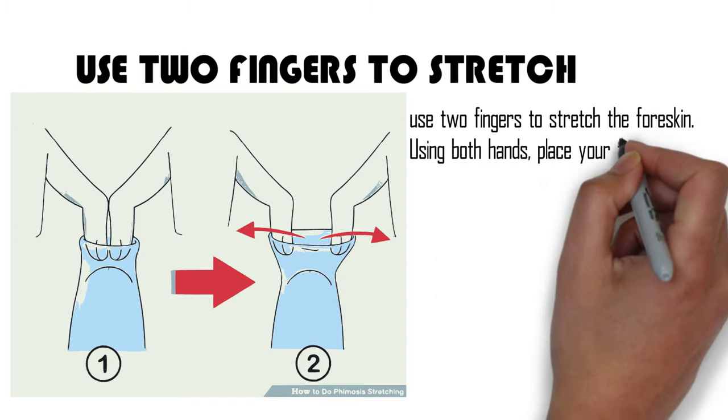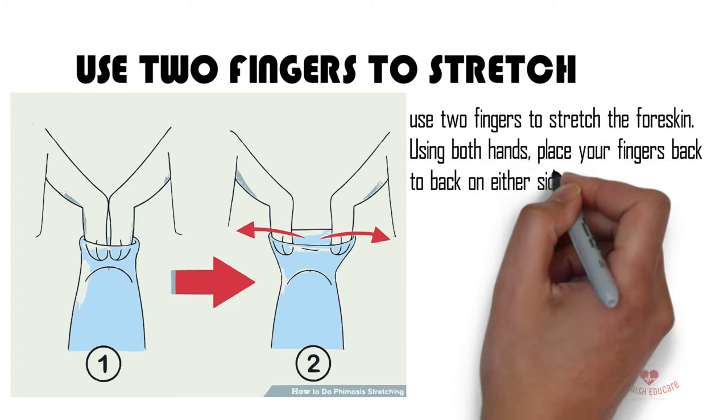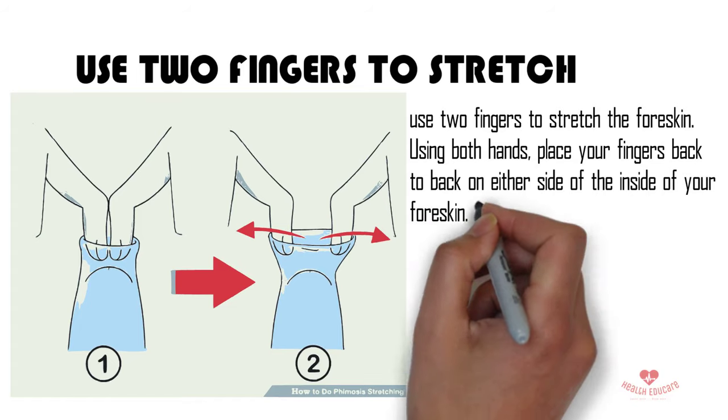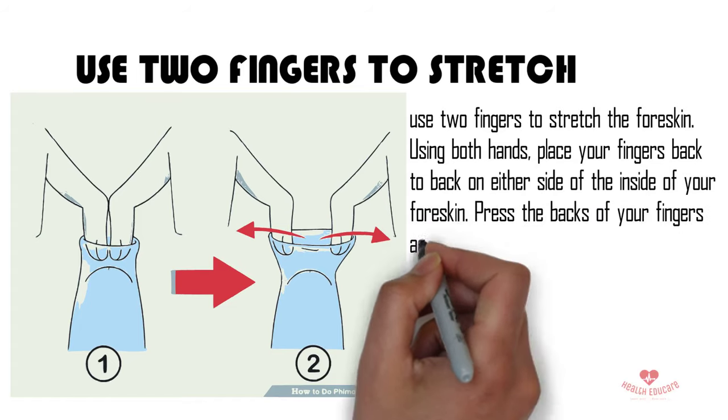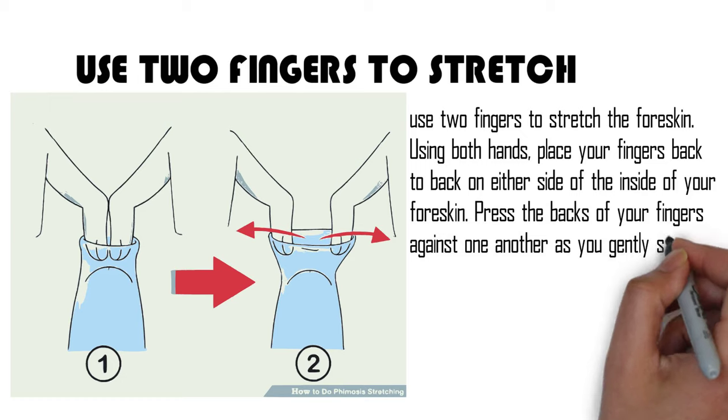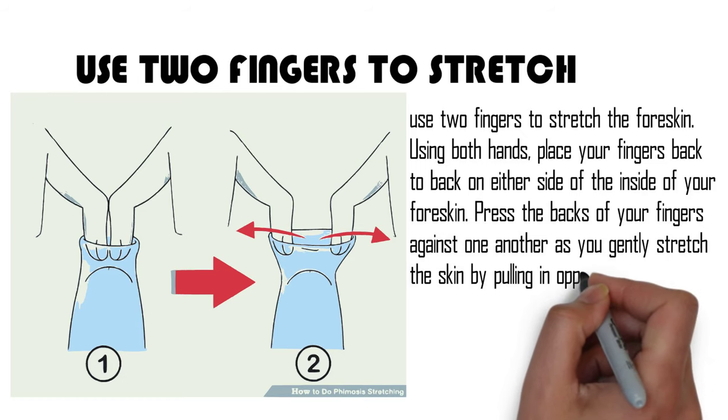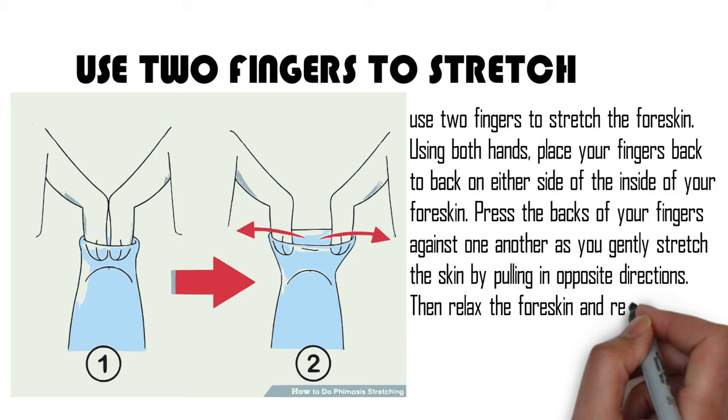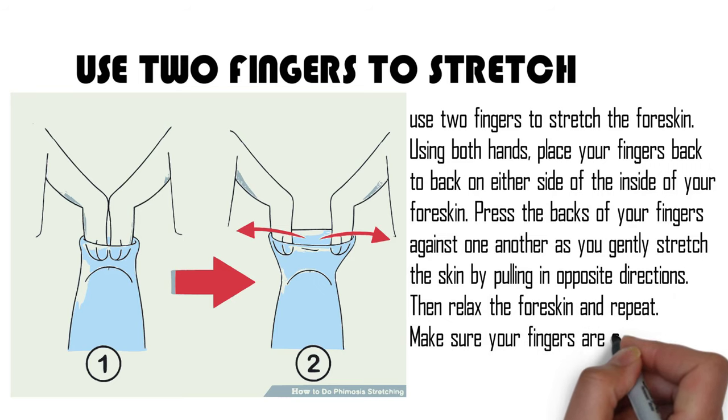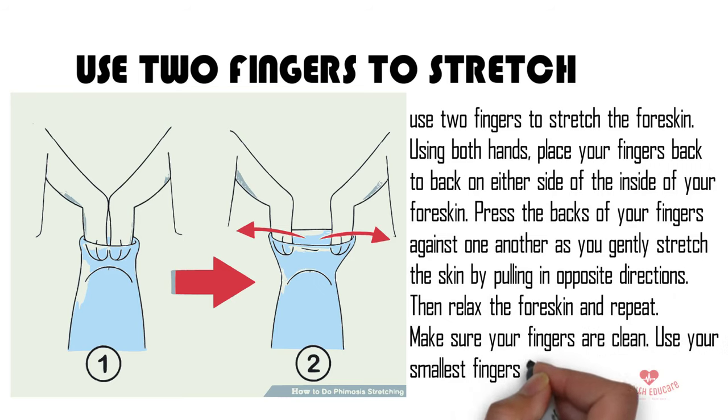Using both hands, place your fingers back-to-back on either side of the inside of your foreskin. Press the backs of your fingers against one another as you gently stretch the skin by pulling in opposite directions. Then relax the foreskin and repeat. Make sure your fingers are clean. Use your smallest fingers if possible.